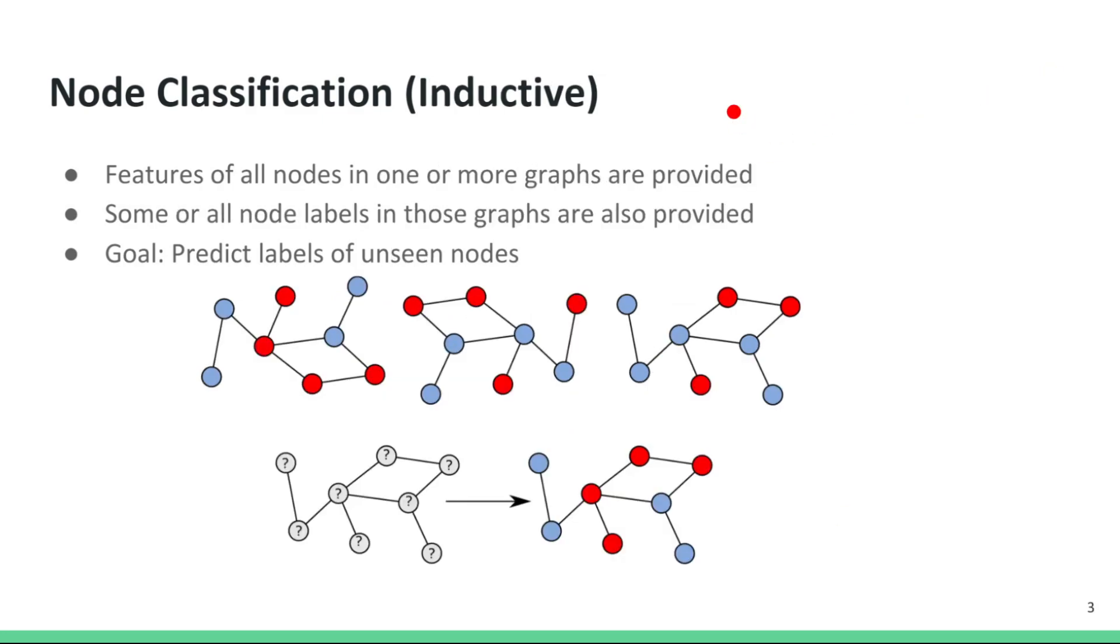In an inductive setting, the goal is to predict labels of previously unseen nodes. For example, you may be given multiple graphs where both the node labels and node features are provided, and your goal is to predict node labels on a previously unseen graph. This is a challenging task, essentially because during prediction of a particular node's label, the classifier does not have access to the labels of the nodes in its neighborhood.